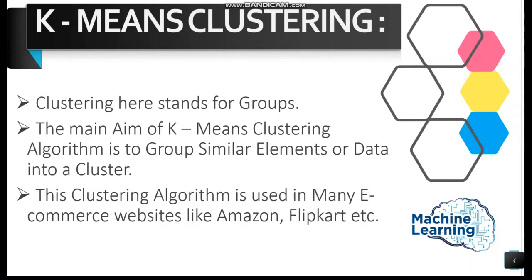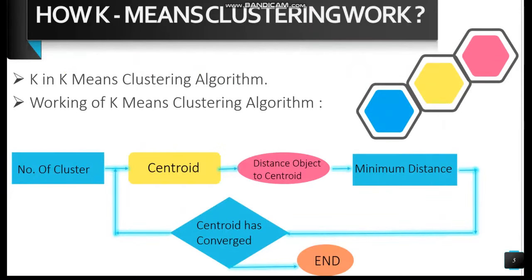The main aim of K-Means clustering is to group similar elements or data into a cluster. For example, you might cluster a population into four groups based on age ranges: group 1 for ages 18–22, group 2 for ages 23–35, and so on. K-Means clustering is used in many e-commerce websites like Amazon, Flipkart, and eBay, where products automatically appear in front of relevant customers — marketing a specific product to a specific audience.